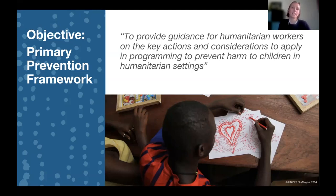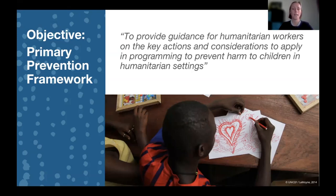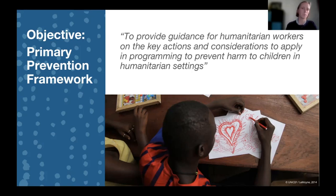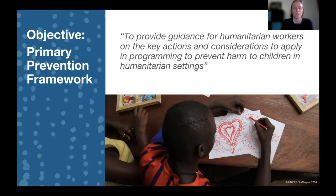Second, if we look at what are the key actions and considerations to applying programming — this is not a step-by-step guide that says, if you have harmful child labour, here is the intervention you do to prevent it. This guidance looks at the range of all different types of harmful outcomes to children — the types of violence, exploitation, abuse and neglect — and then gives guideposts of how, in any context, you can contextualize those to fit your specific situation. And then third, this is to prevent harm to children in humanitarian settings, so specifically it's focused on humanitarian settings, and it's also specifically looking at primary prevention.